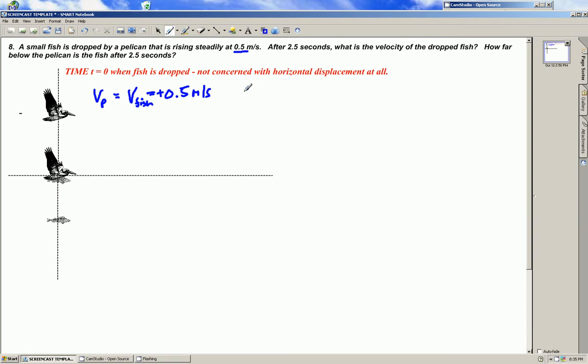We know that the horizontal velocity of the pelican and the fish is immaterial. It's not even mentioned so we don't care if the pelican is just hovering there or moving at a positive velocity because everything is happening in the vertical direction as far as the question is concerned.